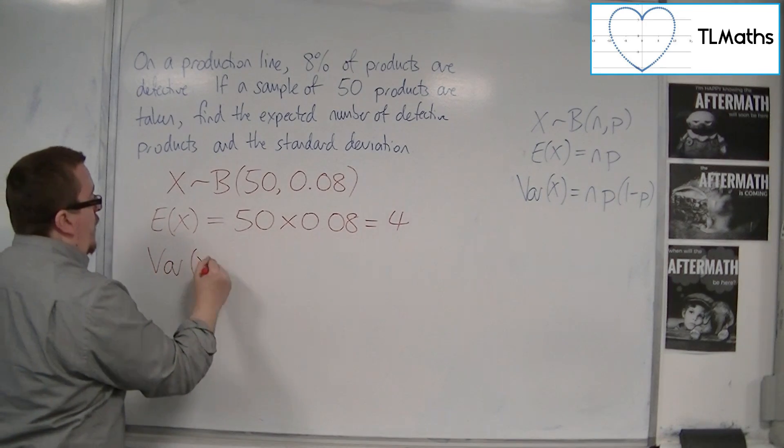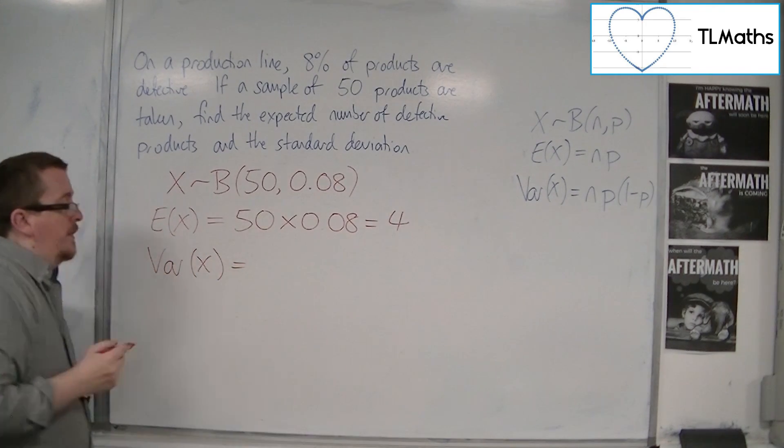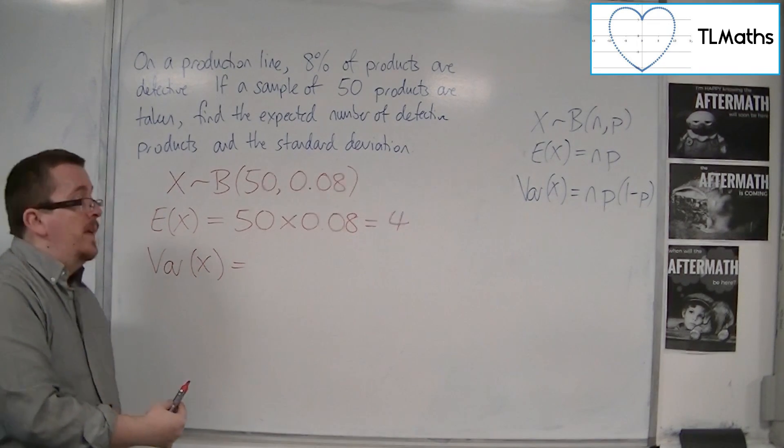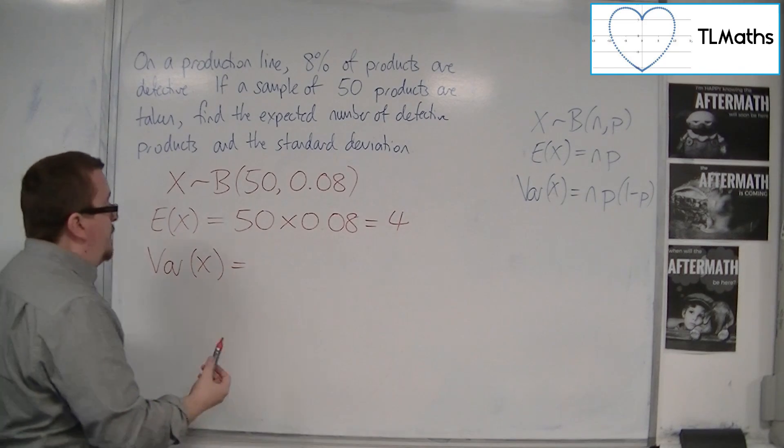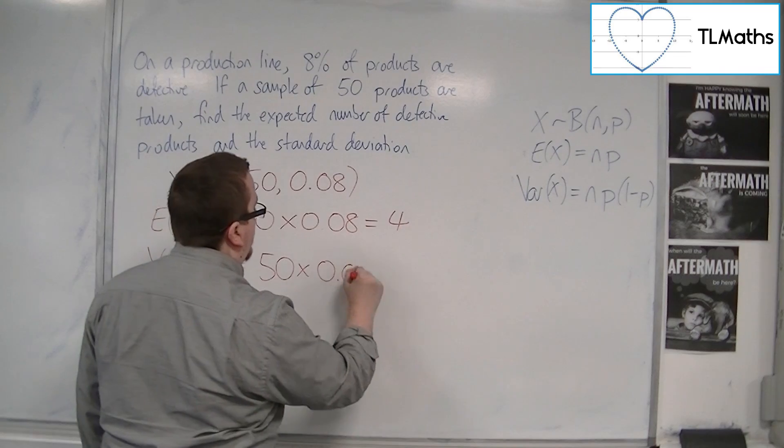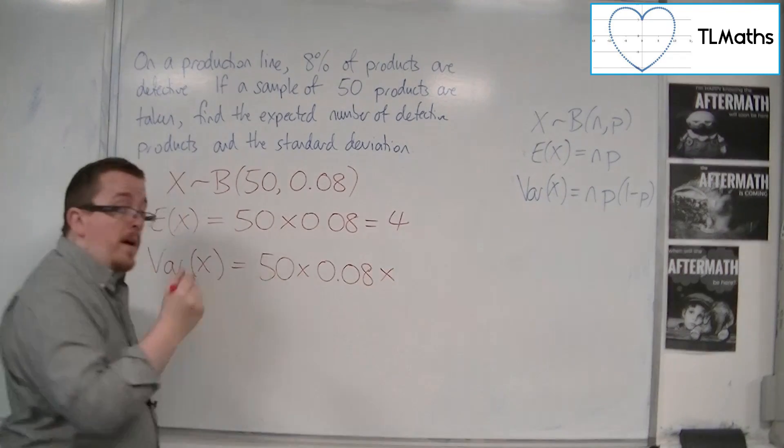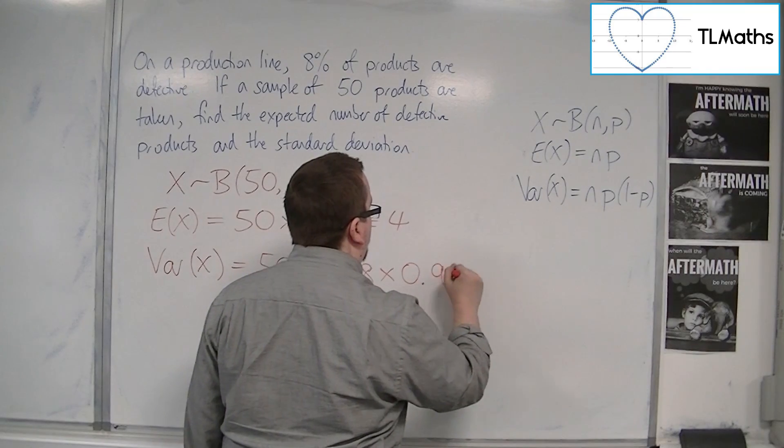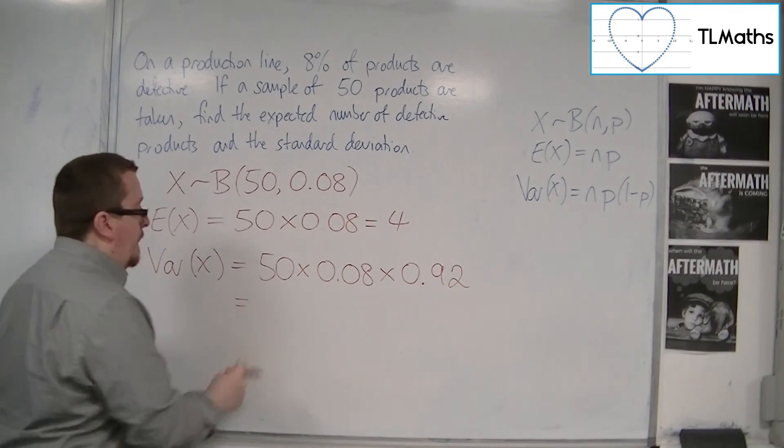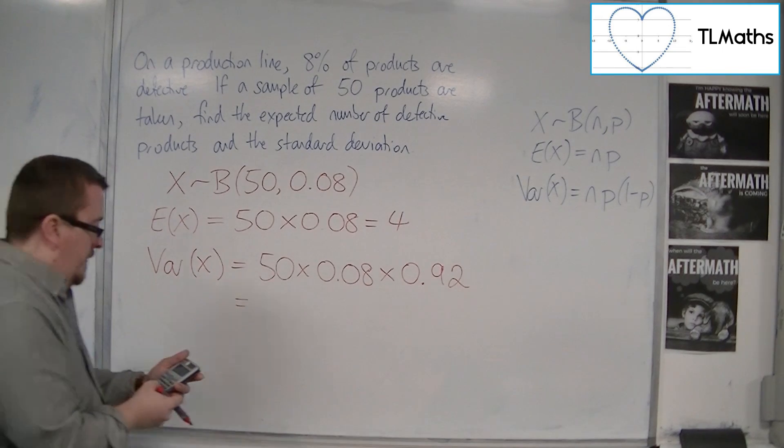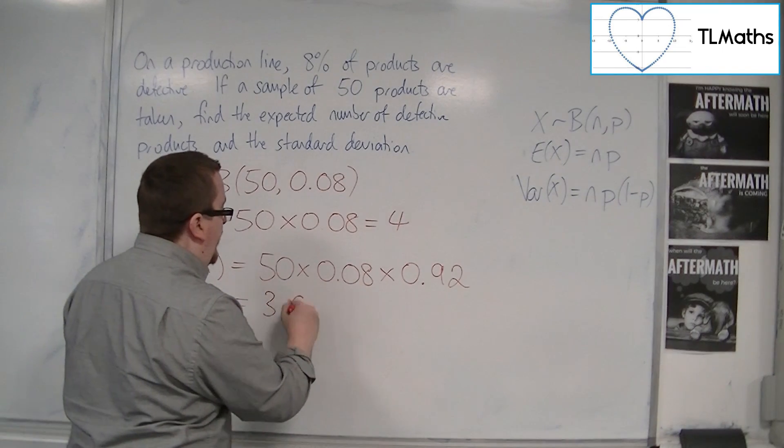Now, I want the standard deviation. I know that the standard deviation is the square root of the variance, so I first need to find the variance. So that's N times P times 1 minus P, so 0.92. So times the 4 by 0.92, and we get 3.68.